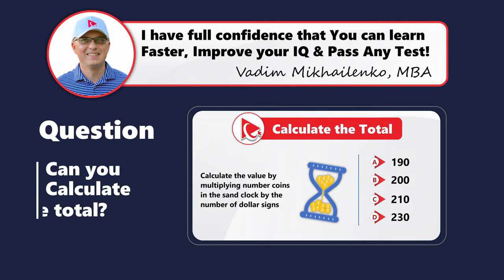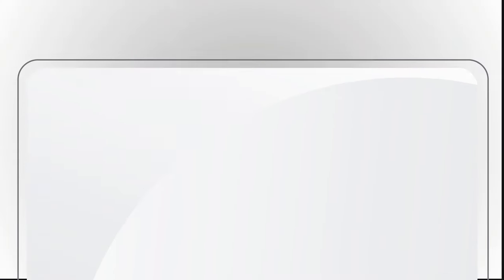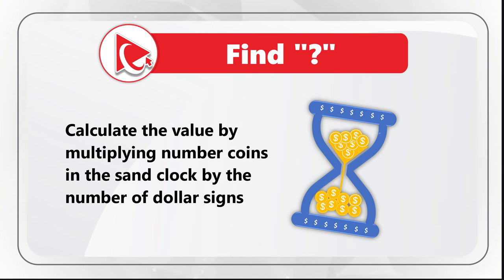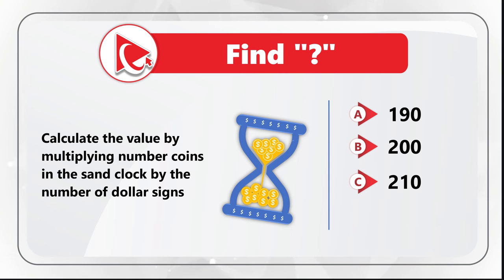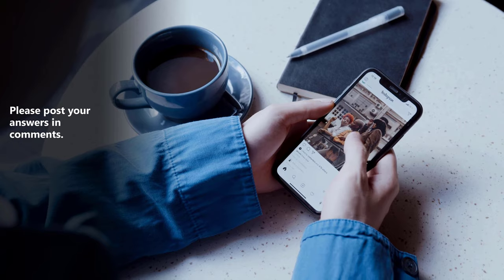Here's a problem to test your business math skills and attention to detail. You need to calculate the value by multiplying the number of coins in the same clock by the number of dollar signs. Select from: Choice A: 190, Choice B: 200, Choice C: 210, and Choice D: 230. Please post your answer and calculations in the comments so I can give you feedback.